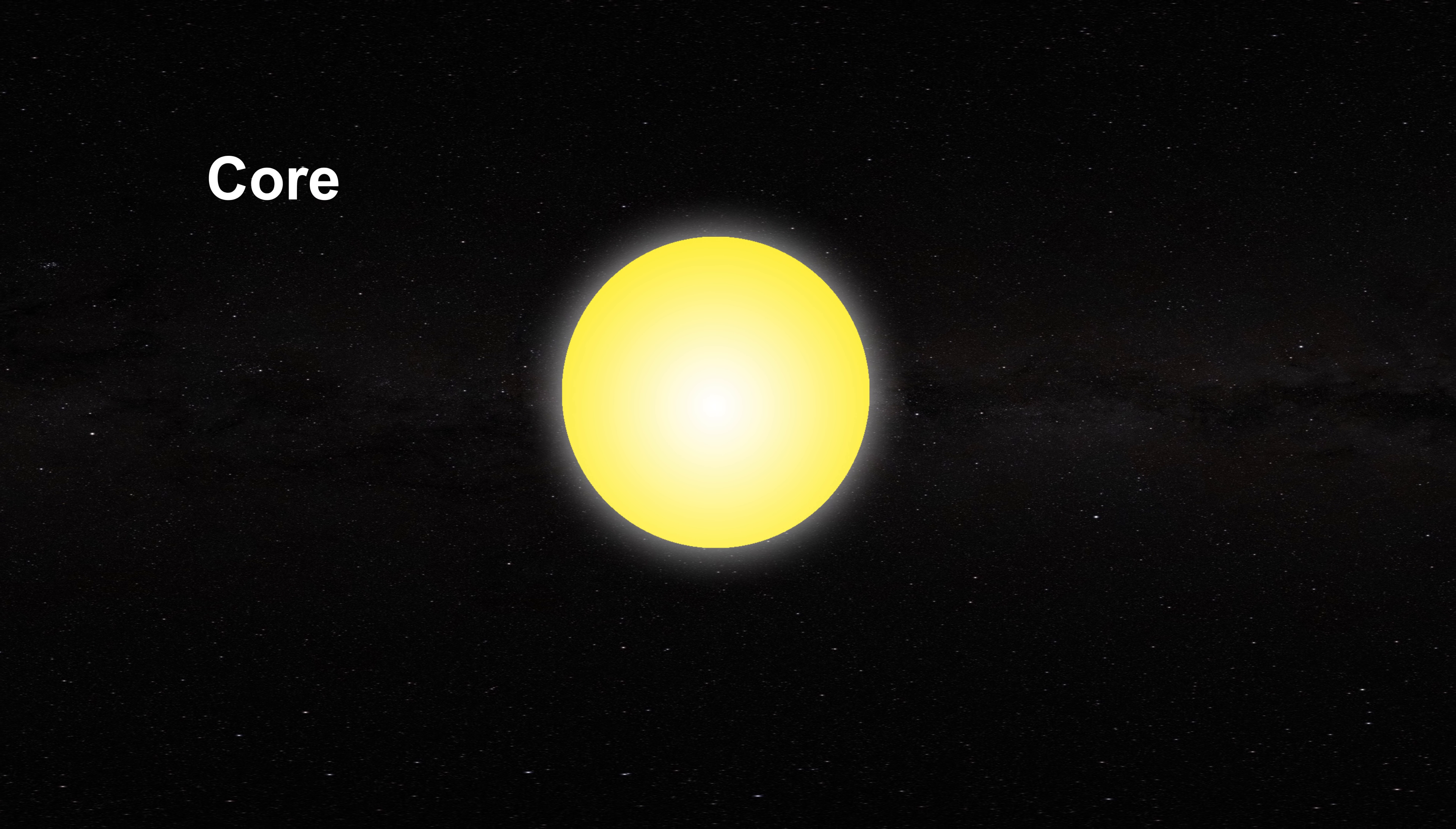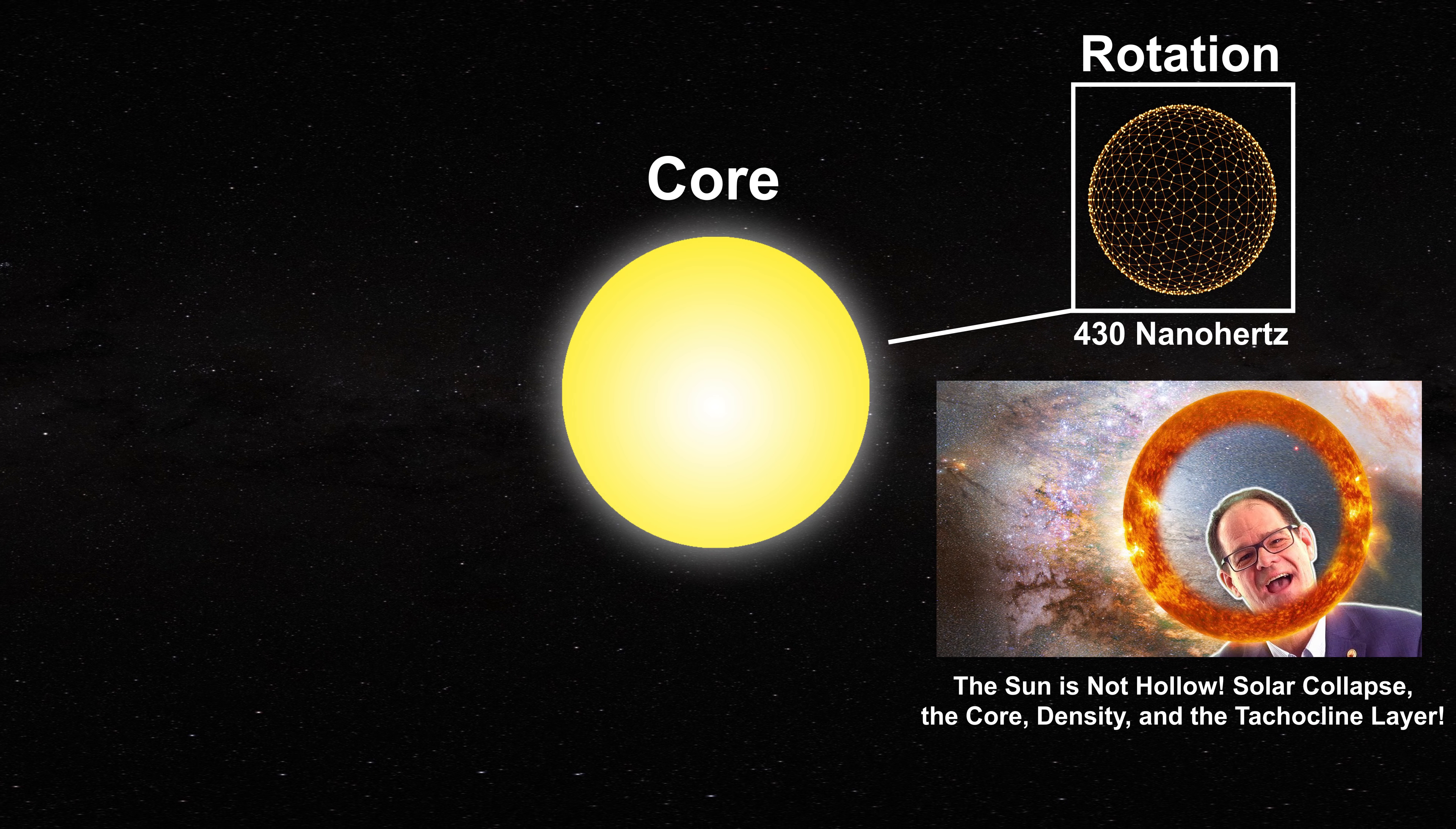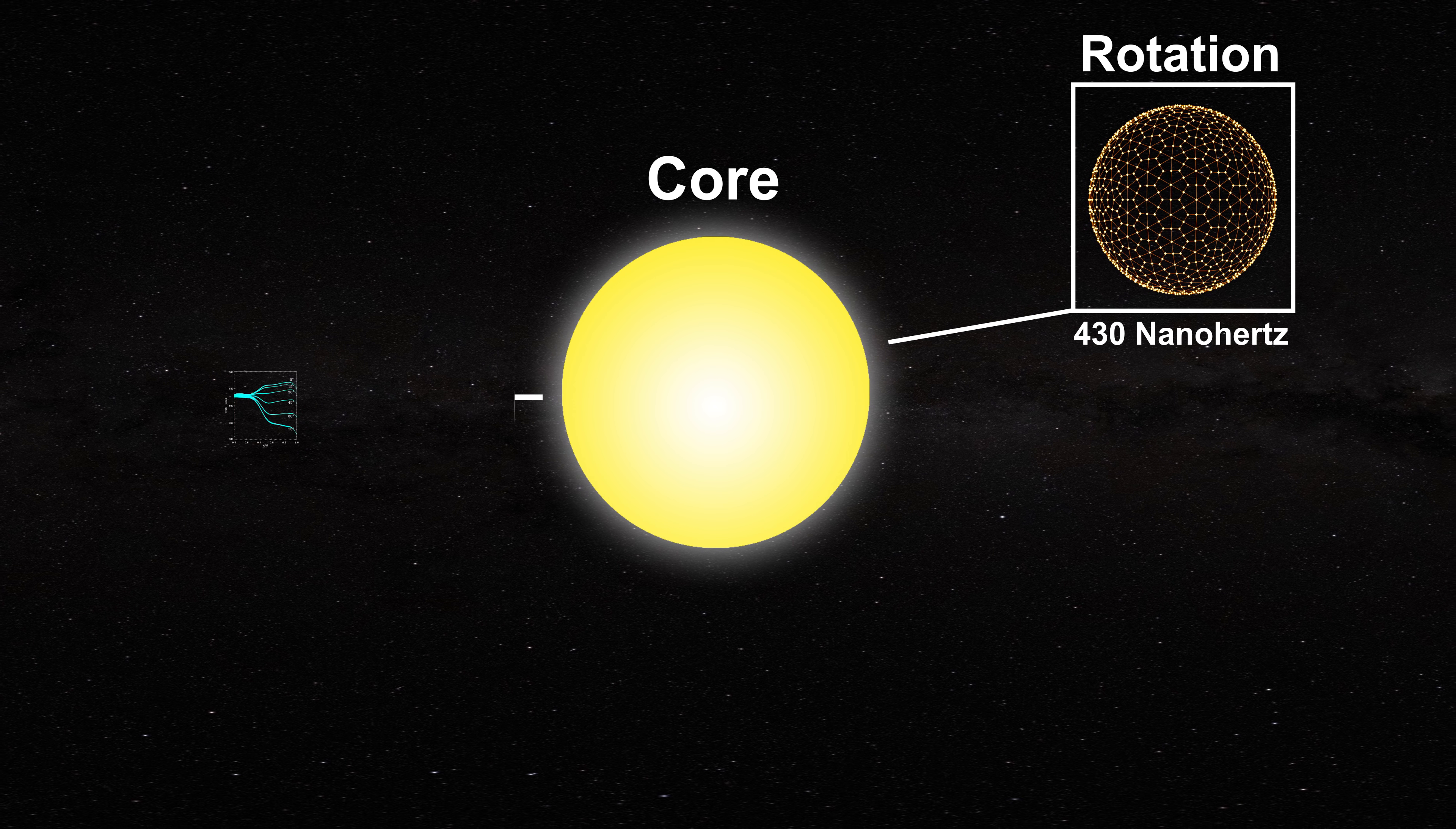We start with the core of the Sun. Using helioseismology we know that this region experiences solid body rotation of 430 nanohertz as we saw in this video. This rotation occurs not only at the core surface but also as we penetrate the core independent of latitude as seen in this figure.